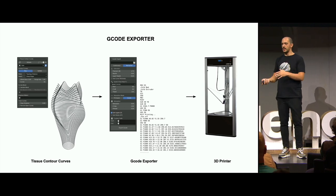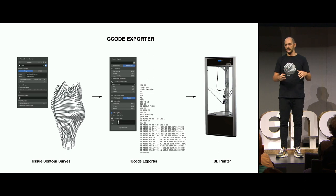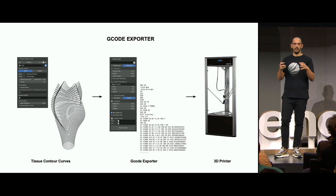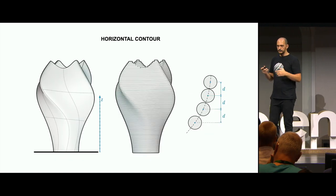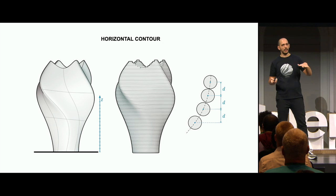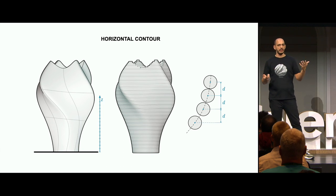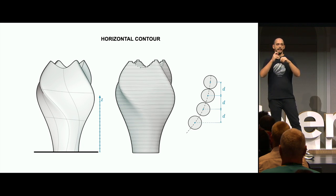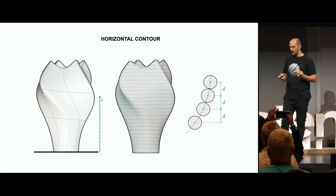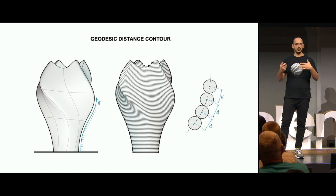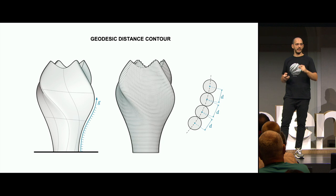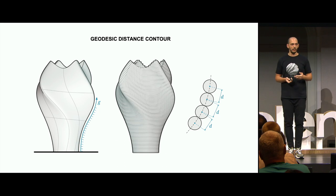Usually when you slice a geometry you use horizontal planes, which works most of the time. But sometimes you have problems with certain materials and geometry, because at certain angles the layers tend to barely touch each other, losing cohesion between them. An additional strategy is to use geodesic distance to offset curves along the geometry and maintain a uniform distance between them. The version implemented in Tissue is an approximation of geodesic distance, but it works well for the job.